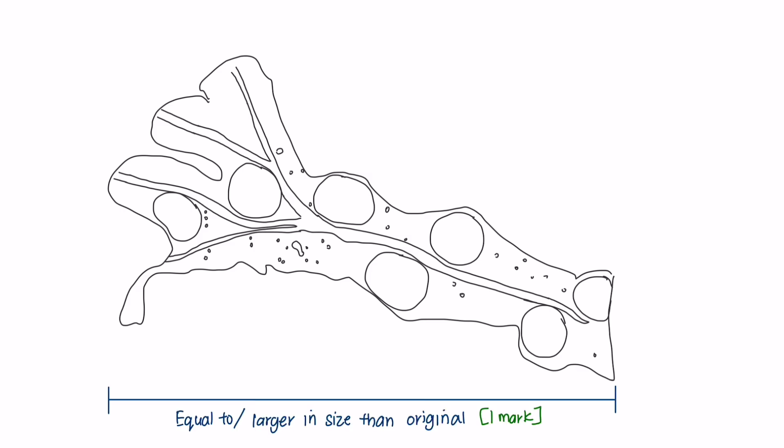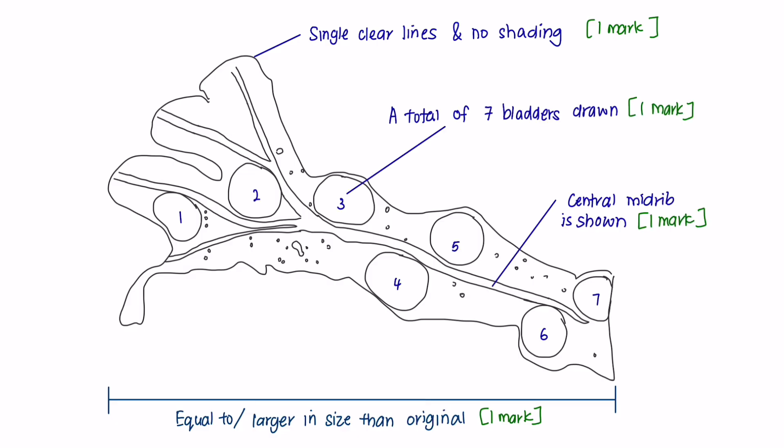So this is how I would draw it. If your diagram is larger in size than original, you will get your first mark. Make sure that you are drawing it with only a single clear line with no shading. Single clear line meaning that when you draw the outline, it shouldn't be looking something like this lines. And finally, moving on into the details, make sure you have a total of 7 bladders drawn and the central midrib is shown in your diagram.